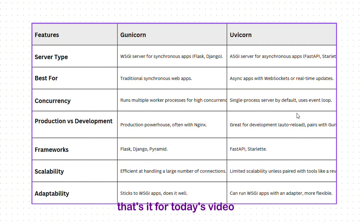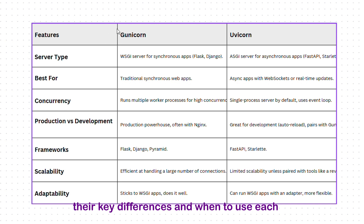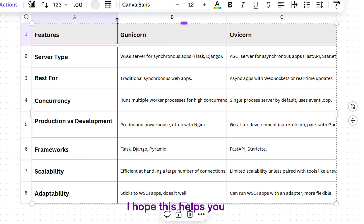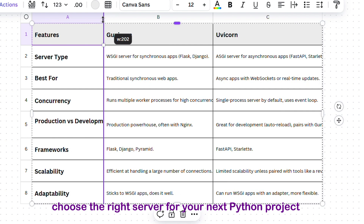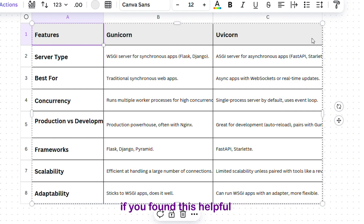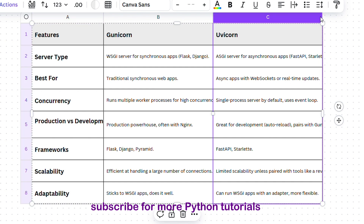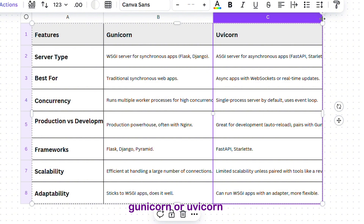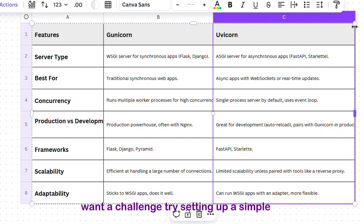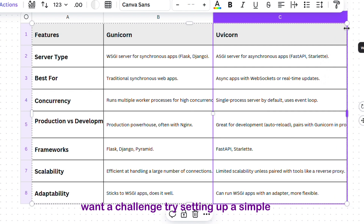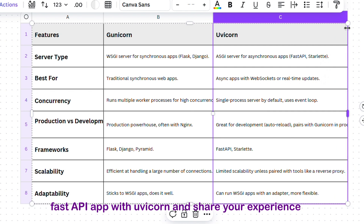That's it for today's video. We covered what Gunicorn and Uvicorn are, their key differences, and when to use each. I hope this helps you choose the right server for your next Python project. If you found this helpful, give this video a thumbs up, subscribe for more Python tutorials, and let me know in the comments what you're building with Gunicorn or Uvicorn. Want a challenge? Try setting up a simple FastAPI app with Uvicorn and share your experience. Thanks for watching, and I'll see you in the next one.